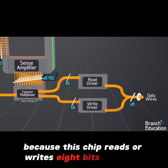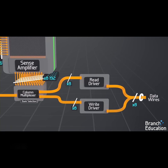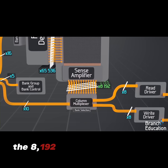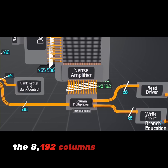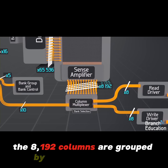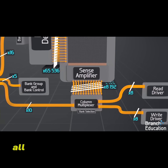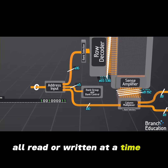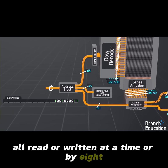Because this chip reads or writes 8 bits at a time, the 8,192 columns are grouped by 8 memory cells, all read or written at a time — or by 8.